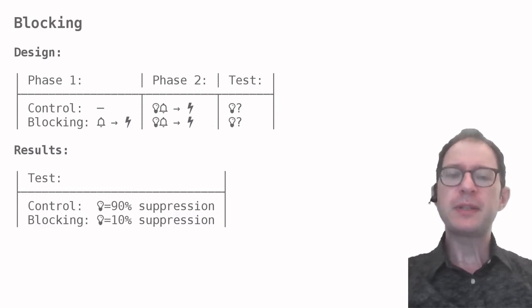In fact, the experiment is called blocking because we say that the previous experience with the sound have blocked learning about the light. But why does being afraid of the sound block learning about the light?